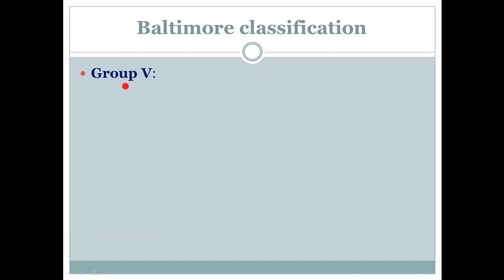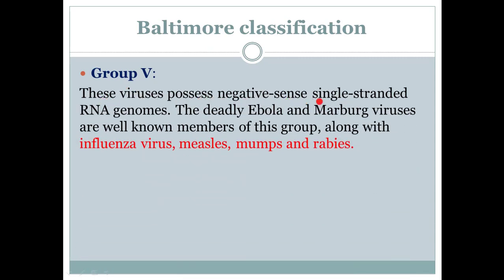Group 5 viruses possess negative-sense single-stranded RNA genomes. The deadly Ebola and Marburg viruses are well-known members of this group. Along with influenza virus, measles, mumps, and rabies — these viruses all belong to Group 5.